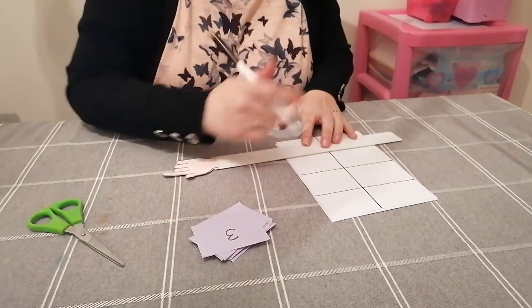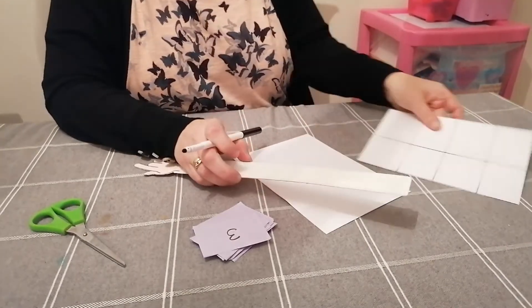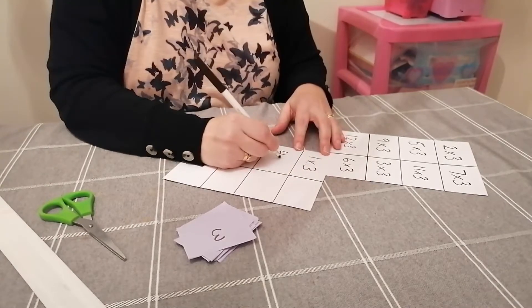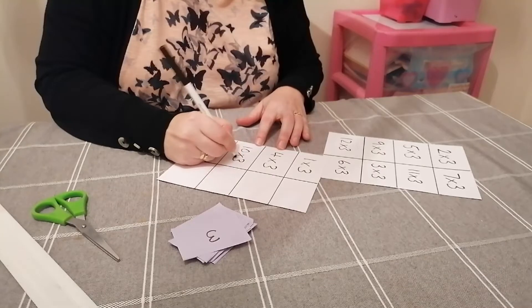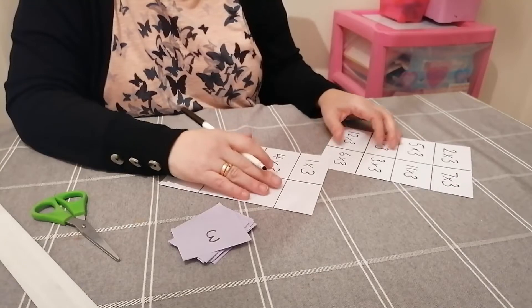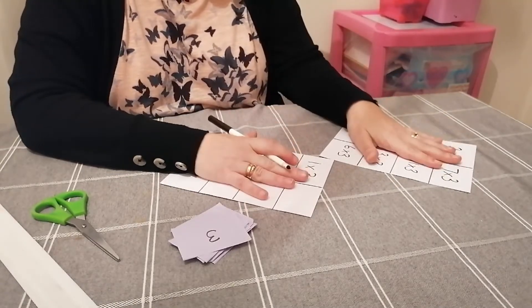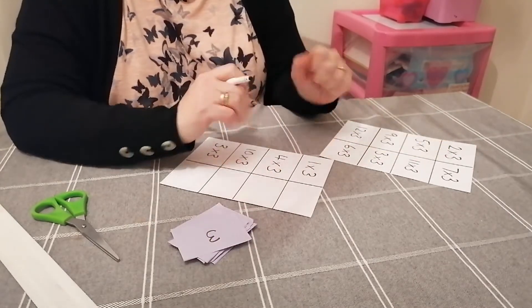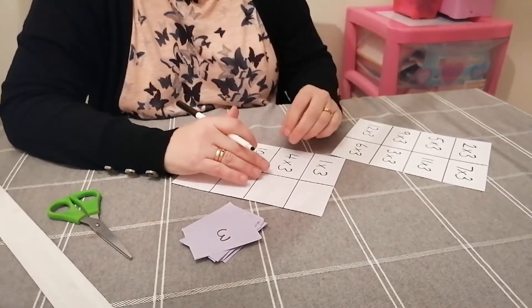So what we are doing now is writing out various three times facts on each card. But really important to consider here: you can't do the same facts on each card, because that's going to mean those cards will match for each person who's playing the game. If we mix up some of the facts on each card, then it's going to make a more interesting game.